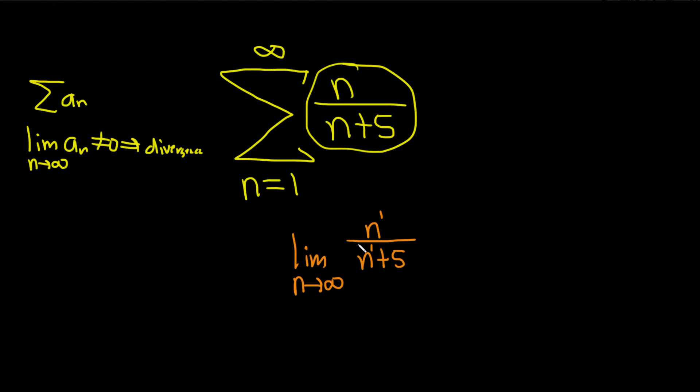the answer is the ratio of the leading coefficients. So 1 here is the leading coefficient, 1 here is the leading coefficient, so the answer is just 1 over 1 which is equal to 1. And this is not equal to 0.